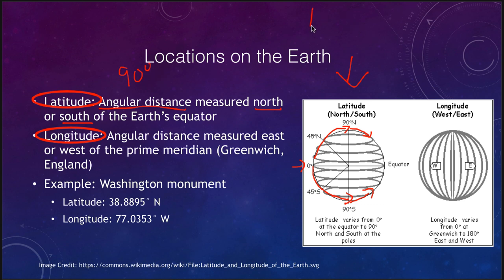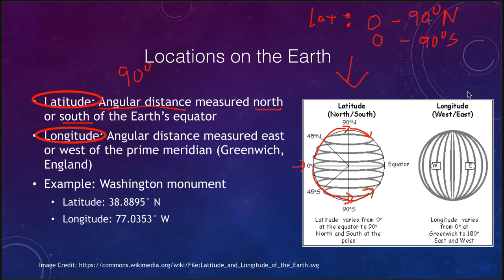The latitude will range from zero to 90 degrees north, and zero to 90 degrees south if we're looking at the south pole. It'll always be between zero and 90 degrees — you will never have anything greater than that.